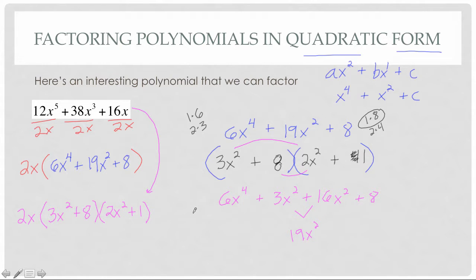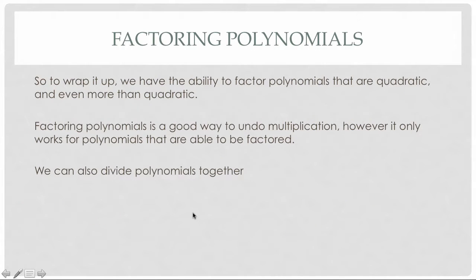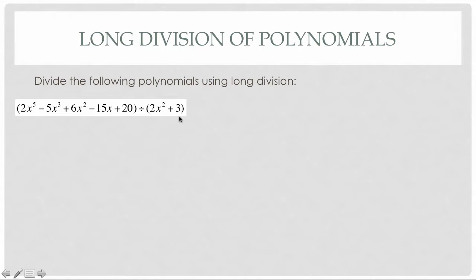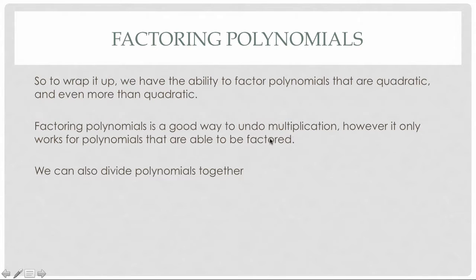To wrap up those sections: we have the ability to factor polynomials that are quadratic, but we can also now look at polynomials that are more than quadratic — we just factored some with x³, x⁴, and even x⁵. Factoring is a good way to undo multiplication, however it only works for polynomials that are able to be factored. Sometimes you try to factor and it won't go anywhere. So we also have the ability to divide polynomials.